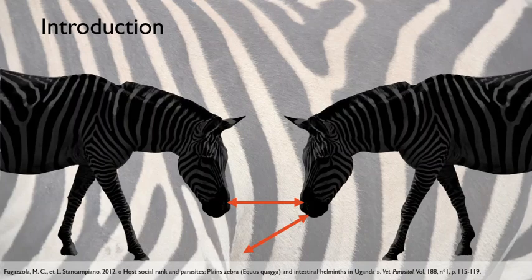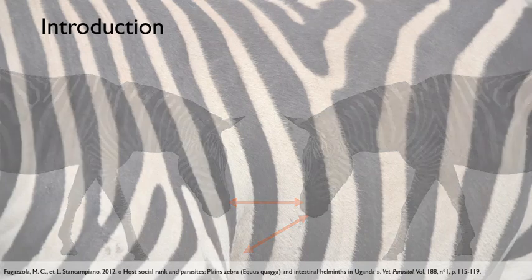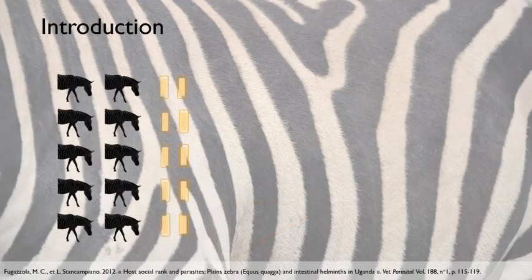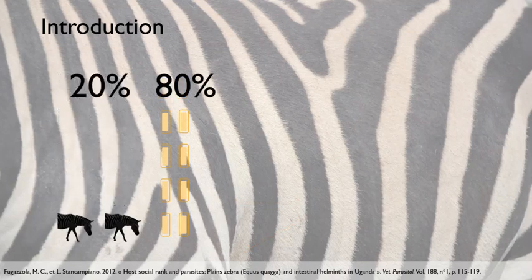Their distribution is heterogeneous within a group. A study from 2012 shows that in wild zebra groups, 20% of individuals are carrying 80% of the parasite burden of the group, with dominants being less parasitized.